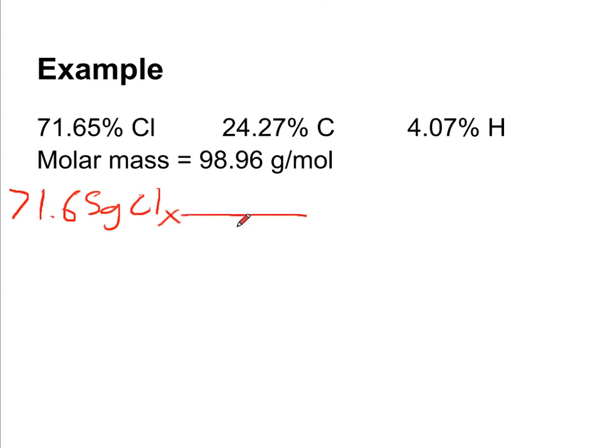To convert that to moles, we're going to use the molar mass of chlorine. One mole of Cl has a mass of 35.5 grams. That should give us 2.02 moles. Do that for the other two.